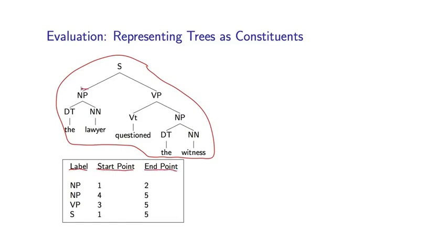If I look at this NP, for example, and I number the words in the sentence 1, 2, 3, 4, 5, this NP spans words 1 through 2 inclusive, so this constituent is NP 1,2. Similarly I have an NP 4,5, a VP spanning words 3 to 5, and an S spanning words 1 through 5. So this particular parse tree has four different constituents.